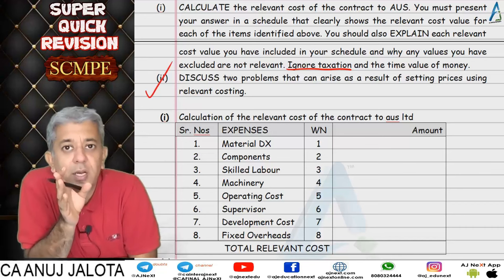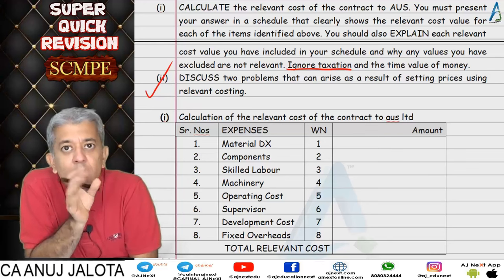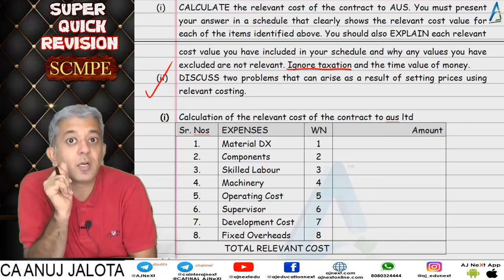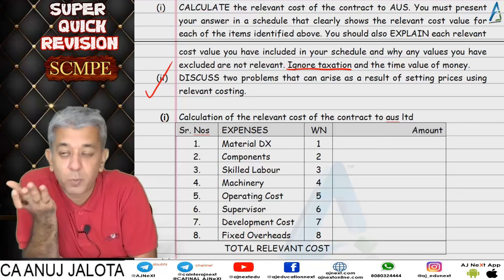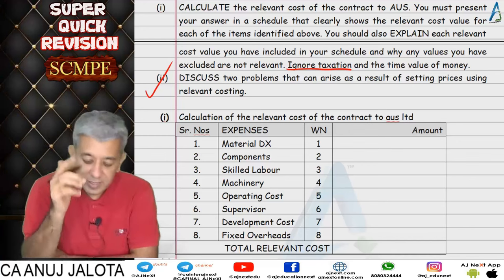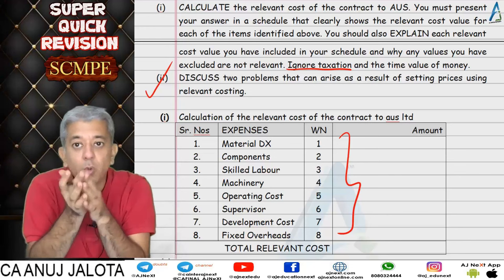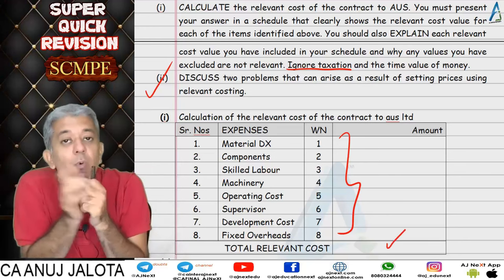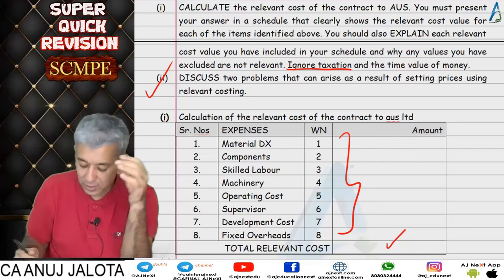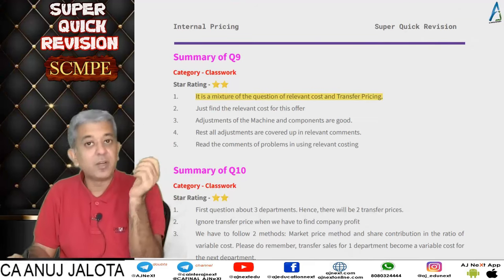Part 2 of question nine asked: what problems arise if you use relevant costing? First, the price quoted to this customer will be very low — other customers may demand the same low price, and you may not be able to raise prices for this customer in the future. Second, the relevant costing statement will never match financial reporting statements (which are on historic cost basis), so profitable contracts under relevant costing may appear as losses in accounting statements, worrying shareholders.